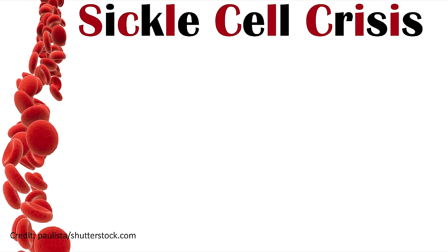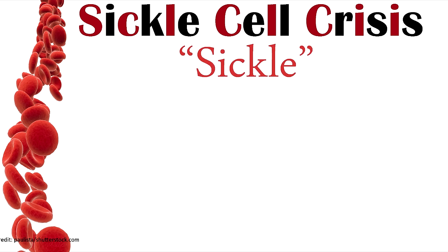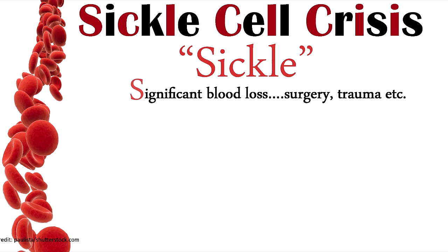Let's talk about factors that can cause a sickle cell crisis — remember the word SICKLE. These are factors that cause low oxygen or increase the body's need for it. S is for Significant blood loss — from surgery or trauma — because the body loses blood and increases oxygen demand, and the red blood cells carrying oxygen are gone. I is for Illness — because the spleen isn't functioning properly, these patients are at risk for illness.